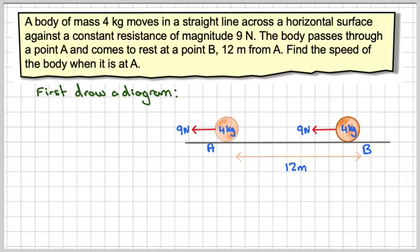There is a resistance force, so assuming it's moving that way, the resistance force will be in the opposite direction of 9 newtons. And obviously 9 newtons is where it starts and this is where it ends. And the initial speed, we don't know, so we'll call that u meters per second.